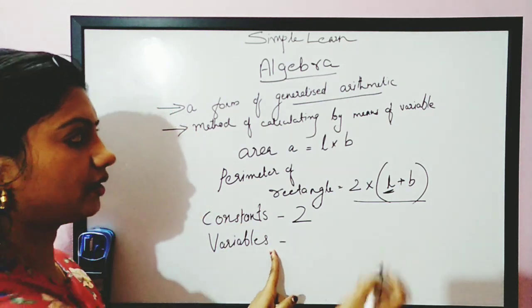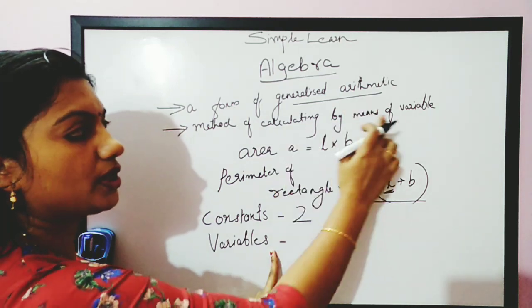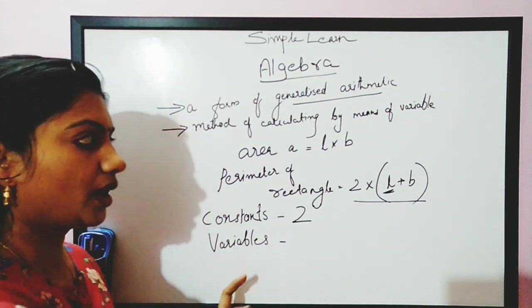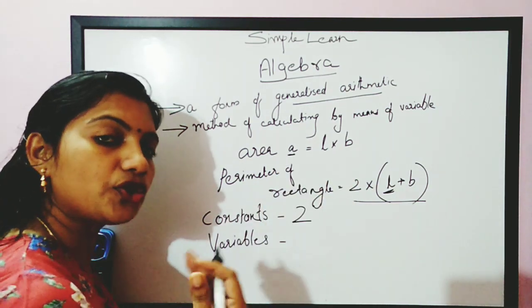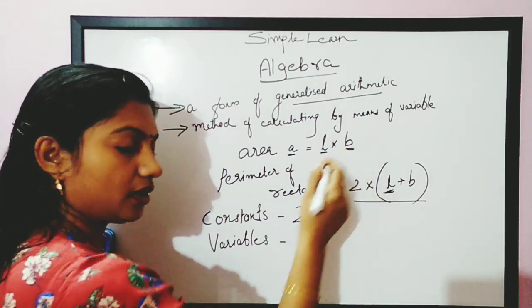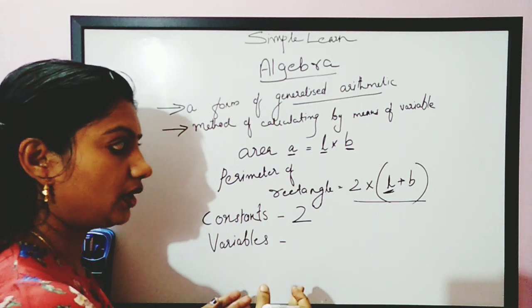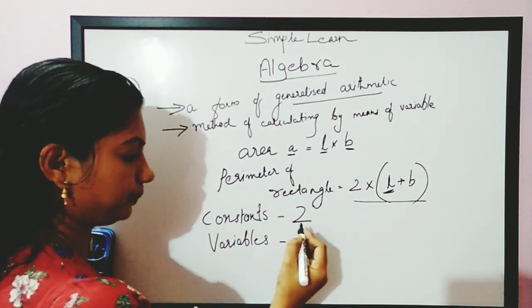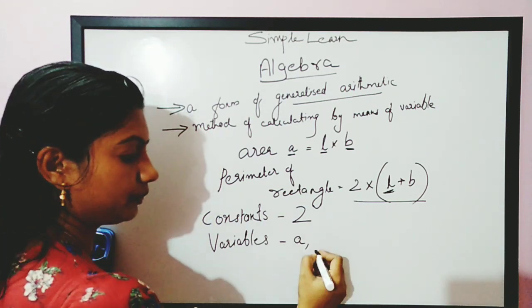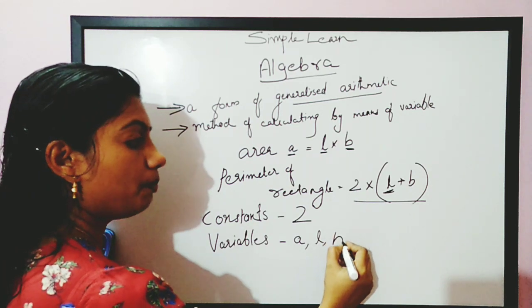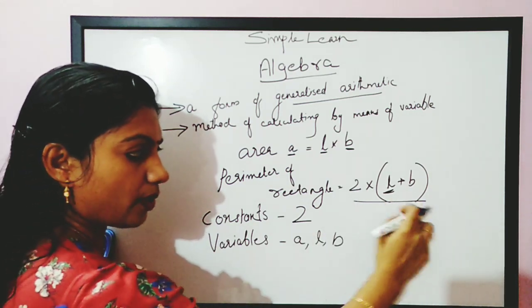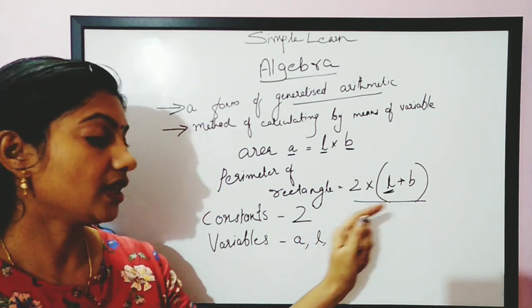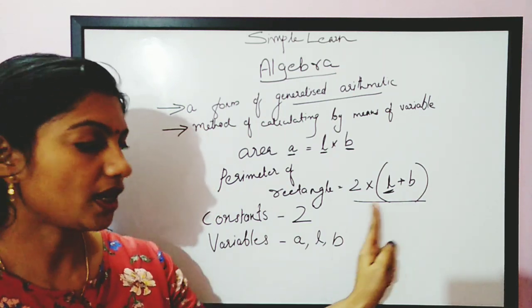What are variables? We said algebra is a generalized arithmetic which we calculate by means of variables. Here A is going to change, L or B is going to change. So the things which change their value are called variables. A is a variable, L is a variable, B is a variable. In the formula 2 is a constant, L is a variable, and B is a variable.